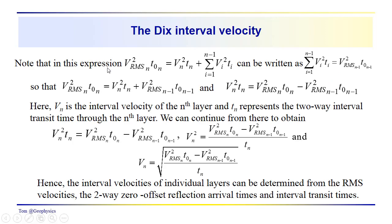So in this expression, we have VRMS_n squared t_0n equals V_n squared t_n squared plus this sum, as we noted. And we can also recognize that this sum here can be rewritten as VRMS_{n-1} squared t_{0,n-1}.